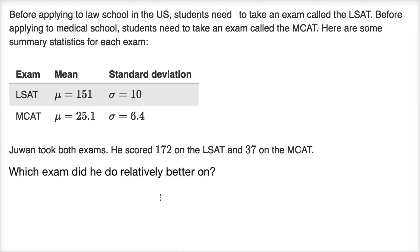You can't just look at the absolute score because they are on different scales and they have different distributions. But we can use this information — if we assume a normal distribution with a mean centered at the given mean — we can think about how many standard deviations from the mean he scored in each situation. In both cases he scored above the mean, but how many standard deviations above the mean?